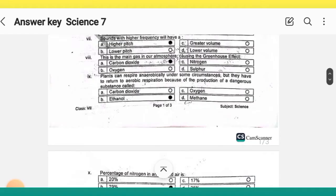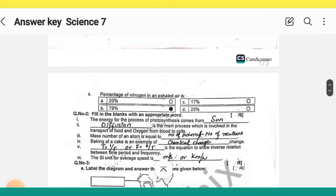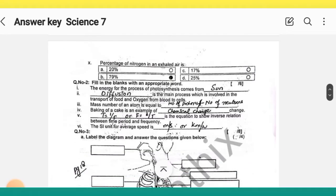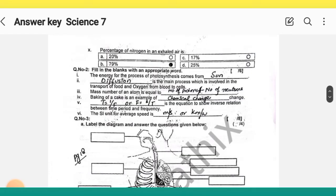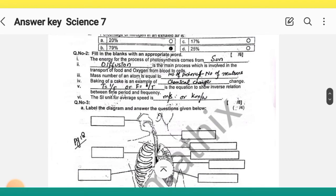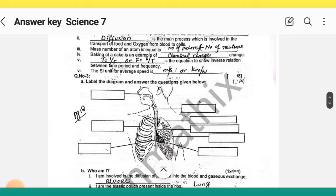MCQ 10 correct option is B. Question number 2, fill in the blanks with an appropriate word. The correct answers are in front of you, you can check it out. Question number 3, label the diagram and answer the questions given below.